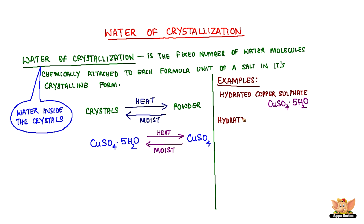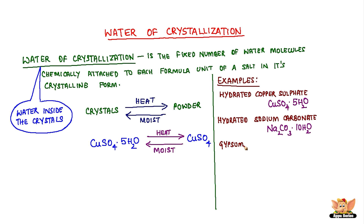We have hydrated sodium carbonate having 10 molecules of water: Na2CO3·10H2O. Gypsum has two water molecules as water of crystallization, and it has the formula CaSO4·2H2O.